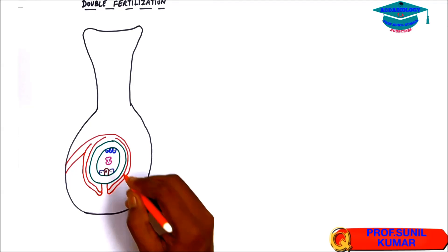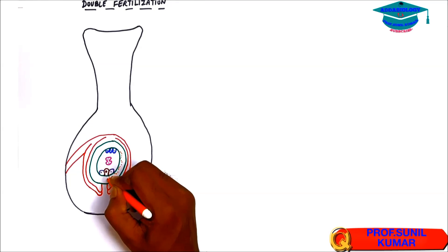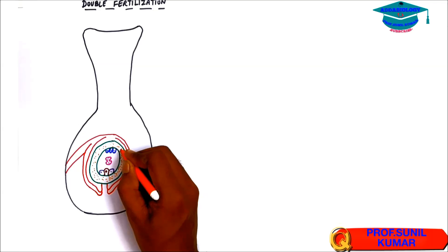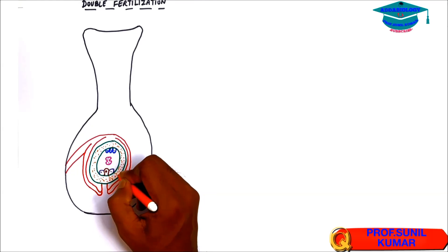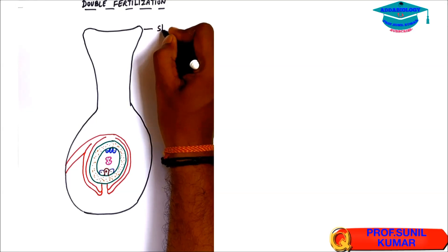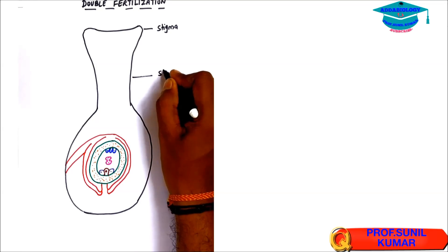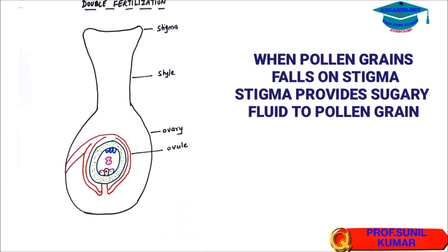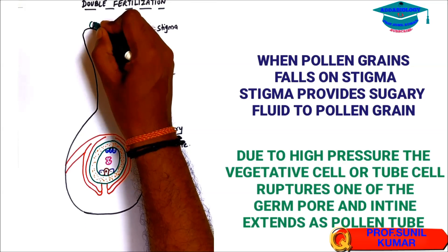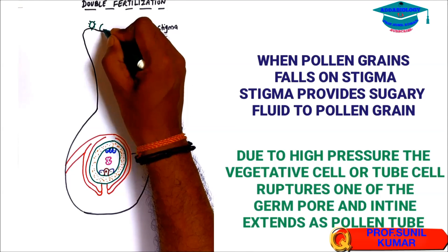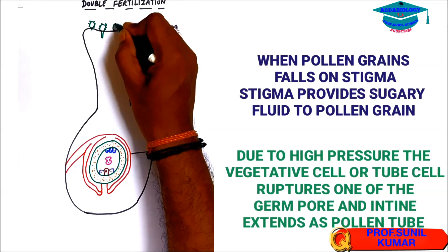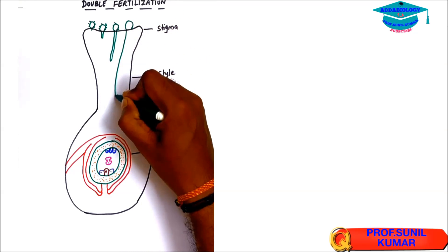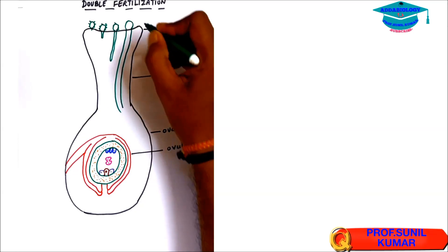The role of synergids is to provide nourishment to the egg cell. The nucellus provides nourishment to the embryo sac. After pollination, the pollen grain falls on the stigma and the stigma provides sugary fluid to the pollen grain. This increases the pressure inside the pollen grain, and as a result the vegetative nucleus with the help of the intine ruptures one of the germ pores and gives rise to the pollen tube. This pollen tube will then try to enter the ovule for fertilization.